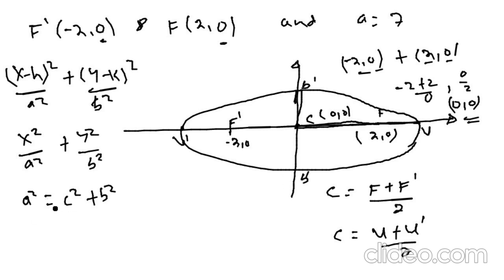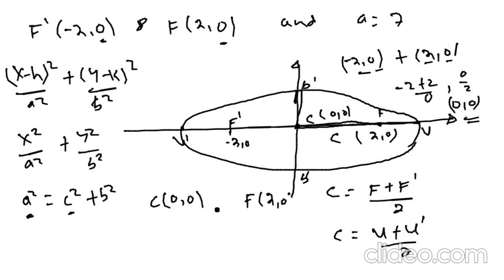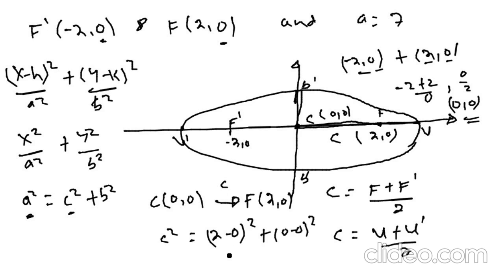So c² is the focal point. If the center is the focal point, we have the coordinate of the distance formula. We have the distance. For the center, we are at 2,0. So c squared equals (2 minus 0)² plus (0 minus 0)² which is 2 squared equals 4.